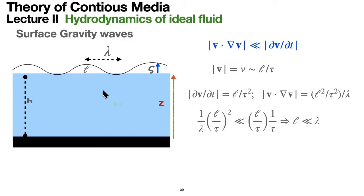Lambda is the wavelength of the wave — the characteristic length over which the velocity field changes along the X direction. So we have a very nice physical condition: we study phenomena in which the wavelength — the distance between wave crests — is much larger than the elevation. We are talking about waves that are not too high and not too short.